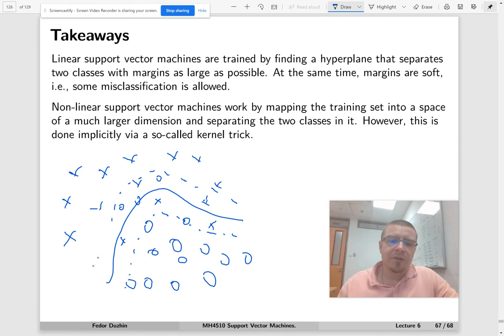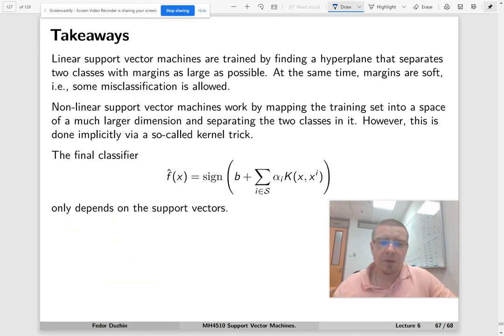Those observations that sit within the margins are called support vectors. The final classifier only depends on support vectors. Support vectors are some subset of our training data, a certain collection of training observations, not all of them, just some of them.